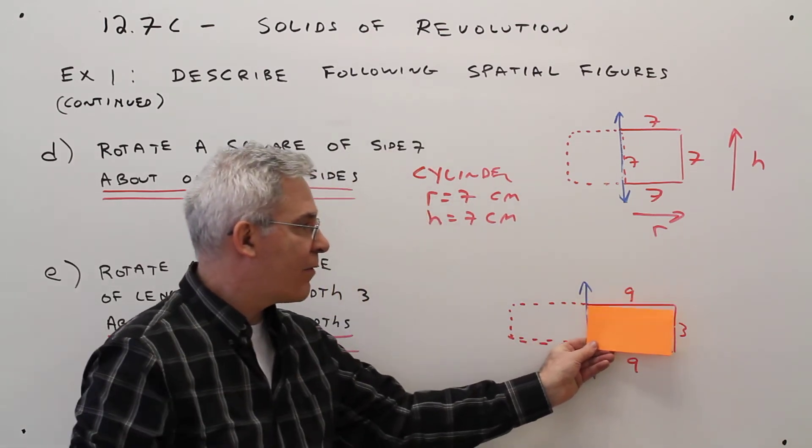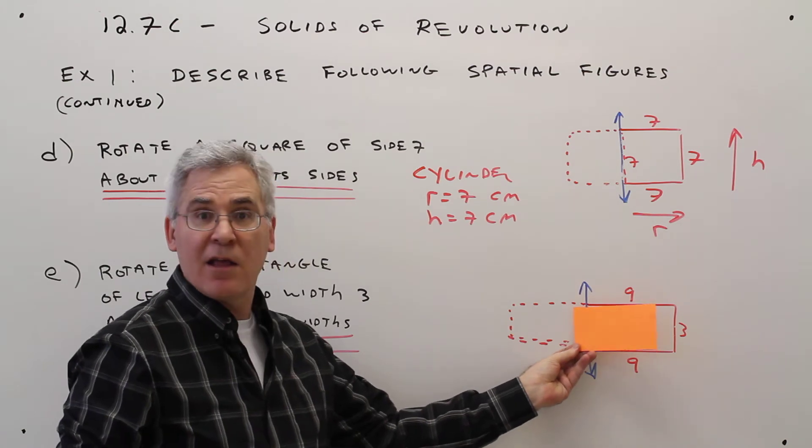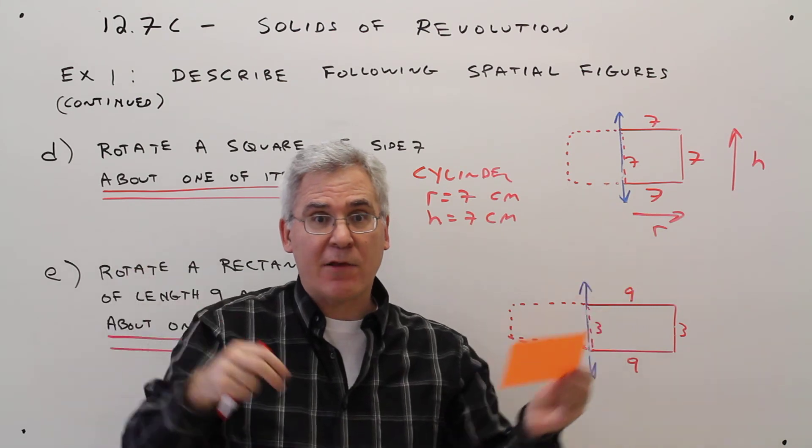And then I like to spin this. So if I were to spin this, it would be very similar to that. I'd be getting a cylinder again. This time would just be a little bit of a longer radius cylinder.